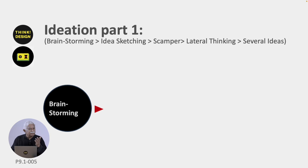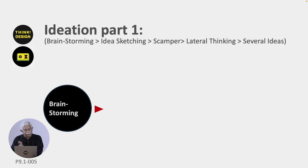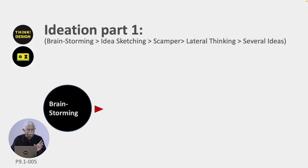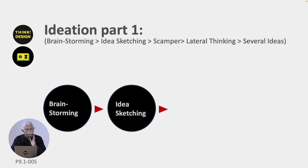We start with brainstorming — very simple. You need to think of keywords connected with the topic, which is basically the restatement of the problem you have already done. You need to find solutions to the problem; any ideas that you get, you put down on a piece of paper. You can sit with your friends to brainstorm. Once you have enough ideas, you move on to idea sketching.